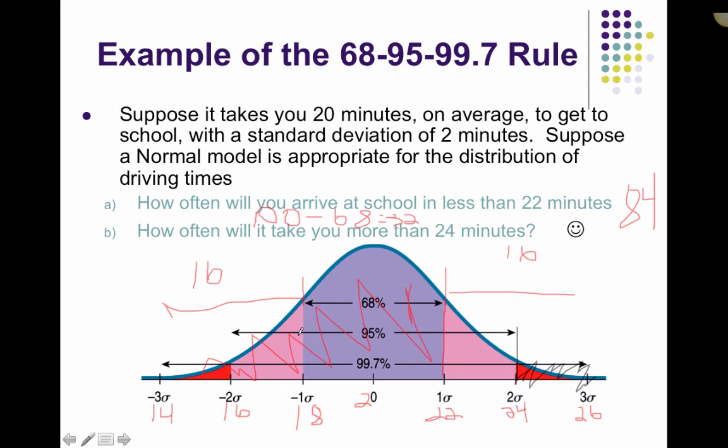So, again, that 95% is in the middle. So, if I take 100% and I subtract the 95%, I'm left with 5% left over. 5% cut in half is 2.5%. So, from here to here, this is 2.5%.